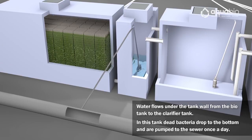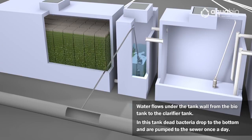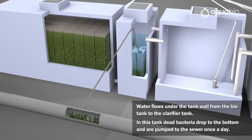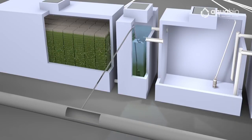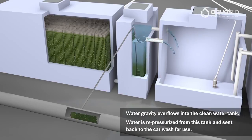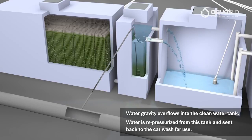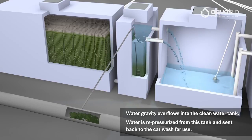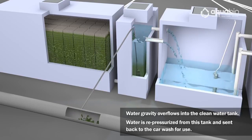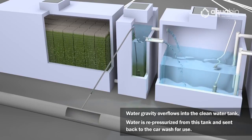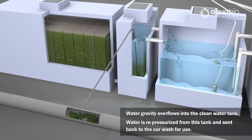Water flows under the tank wall from the bio tank to the clarifier tank. In this tank, dead bacteria drop to the bottom and are pumped to the sewer once a day. Water gravity overflows into the clean water tank, where it is repressurized and sent back to the car wash for reuse.